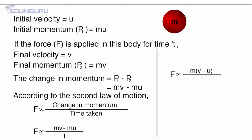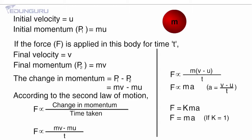Now do you remember the first equation of motion? V = U + AT. From that, (V − U) / T equals A, that is acceleration. So if I put A in place of (V − U) / T, I get F is proportional to MA. Removing the sign of proportionality, I put a constant K, so F = KMA. And if K = 1, then F = MA. That means force equals mass into acceleration — force is equal to the product of mass and acceleration of a body.